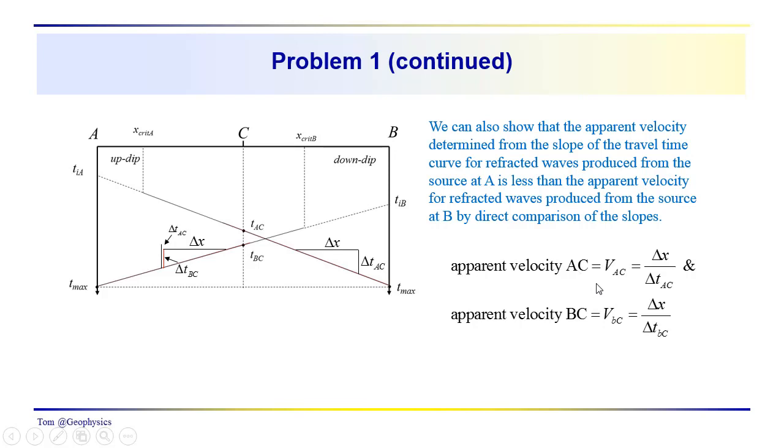Delta x over delta t gives us our velocity. The delta t for the critical refraction coming from the down dip location source at B is less than the delta t for the critical refraction from source at A. So the apparent velocity for the critical refraction generated at A is delta x over delta t AC. The apparent velocity for the critical refraction generated at B is delta x over delta t BC. We've shown that delta t BC is less than delta t AC, so VBC is greater than VAC.